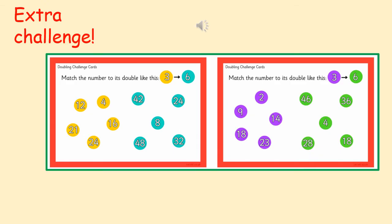Here's an extra challenge for you if you want some more doubling. So match the number to its double. So on the left, we've got 3 doubled is 6. You need to have a look at the numbers on the left and match them to the numbers on the right.